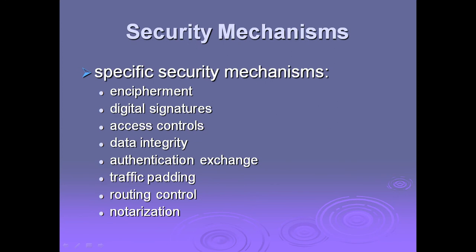Under specific security mechanisms, there are many types. The first is encipherment, in which plain text is converted into a cipher text — a non-readable form — using mathematical algorithms. The second is digital signature, in which a message is transferred using cryptographic methods to prevent forgeries. The third is access controls, which prevent unauthorized users from accessing resources.